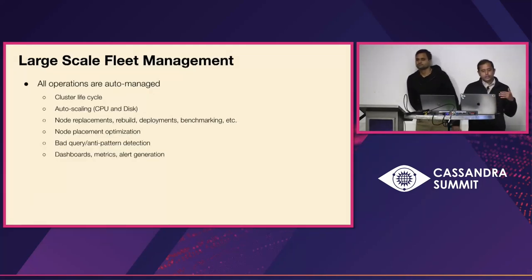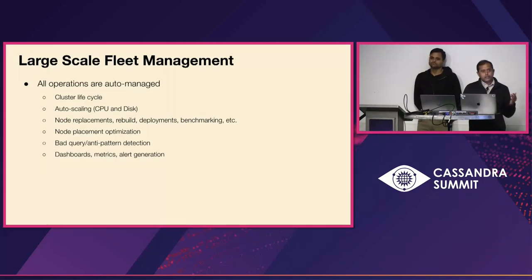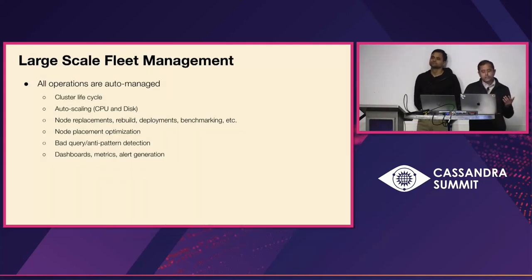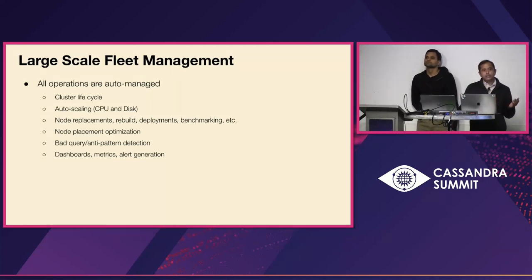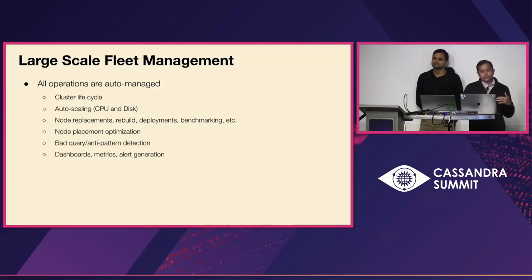Fleet management requires full automation at our scale — no manual operations. The fleet automatically reacts to changes, including vertical auto-scaling, CPU and disk bad host detection and evacuation, and node replacements for better VM packing. All dashboard metrics and alerts are auto-generated when new clusters are created, so no manual actions are needed there. We provide strict SLAs to customer teams, with clusters grouped into tiers where SLA depends on the service cluster tier.